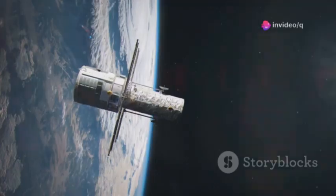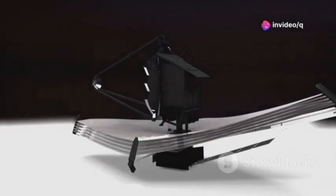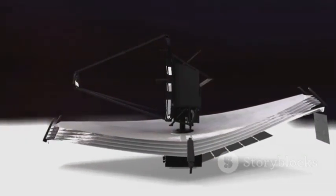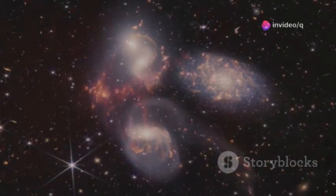For decades, Hubble was our legendary eye in the sky, transforming our view of the universe. But JWST isn't Hubble's replacement, it's its successor, building on Hubble's discoveries and answering new questions. Hubble sees mostly visible and ultraviolet light.